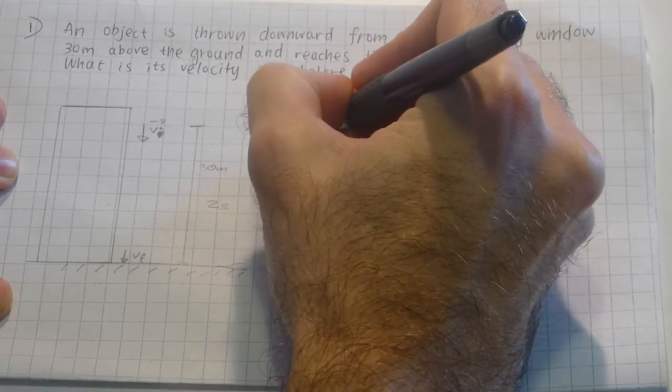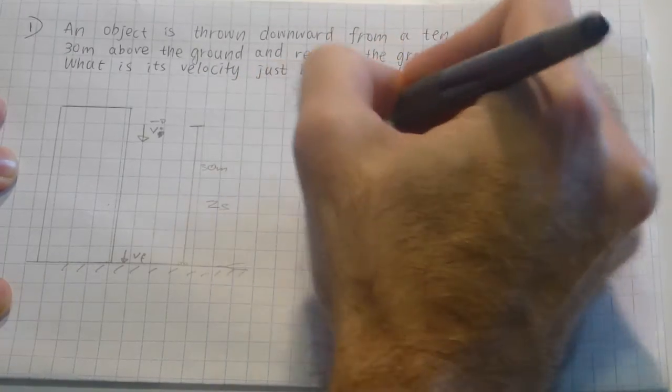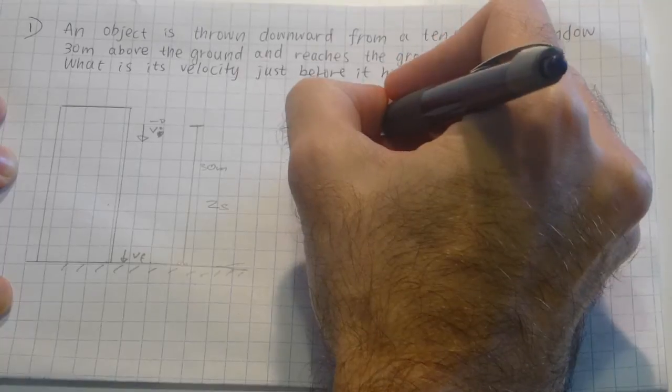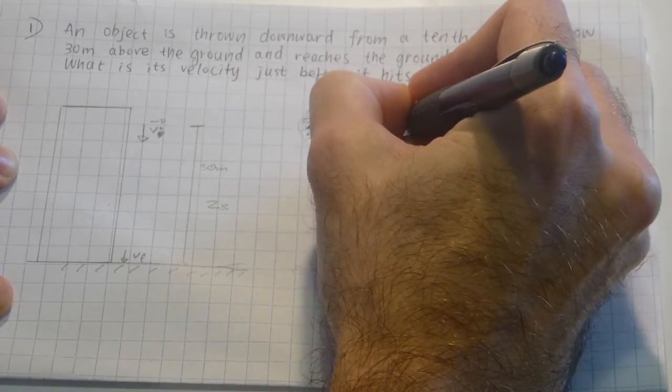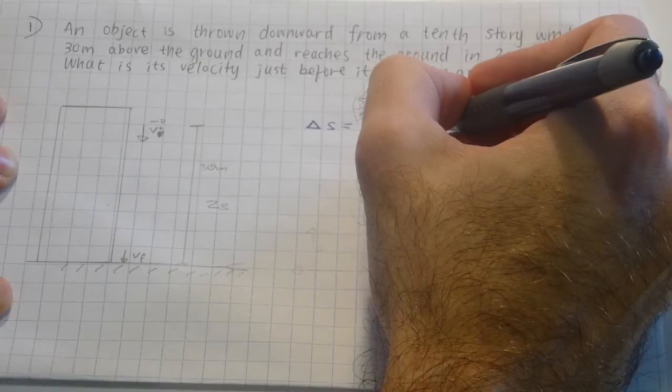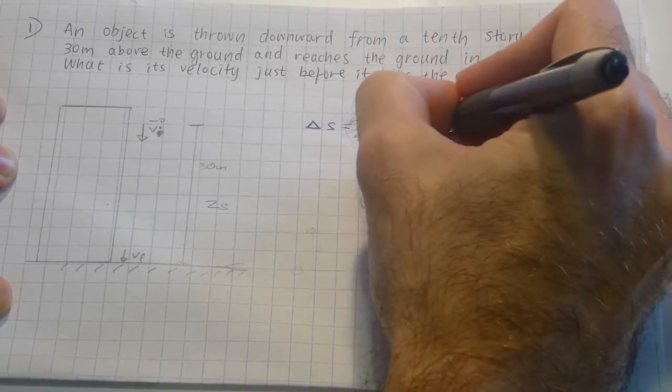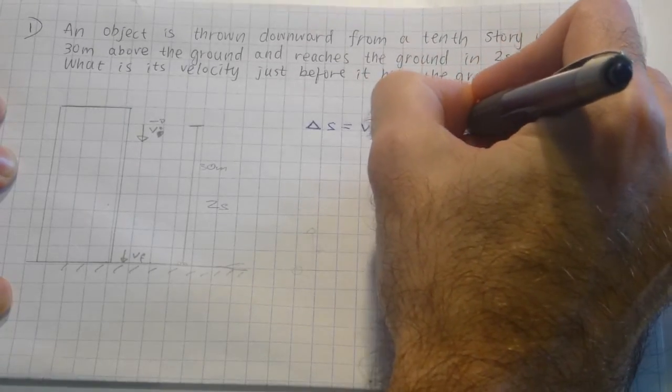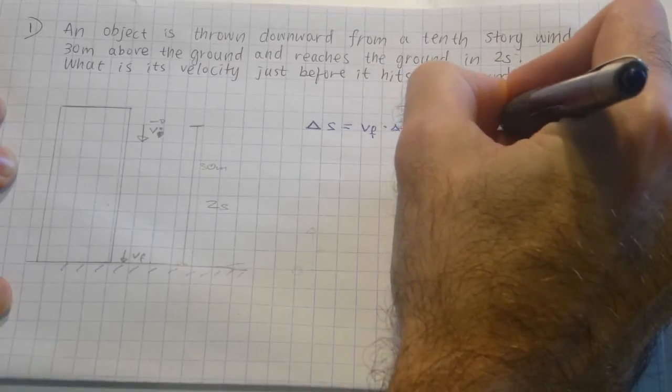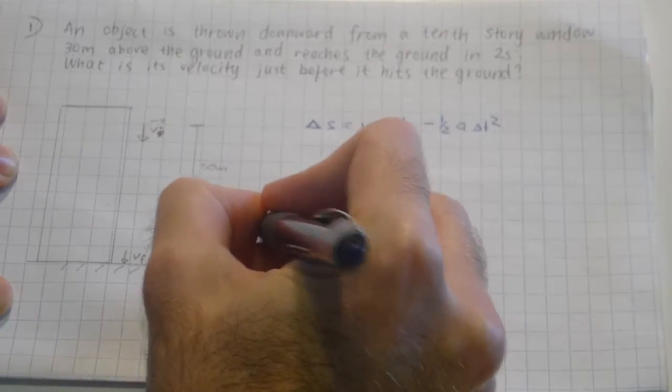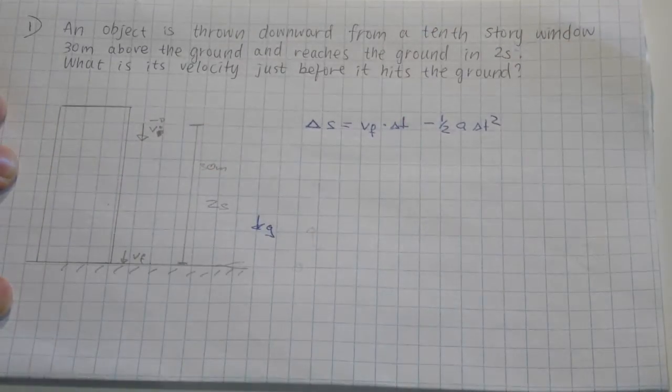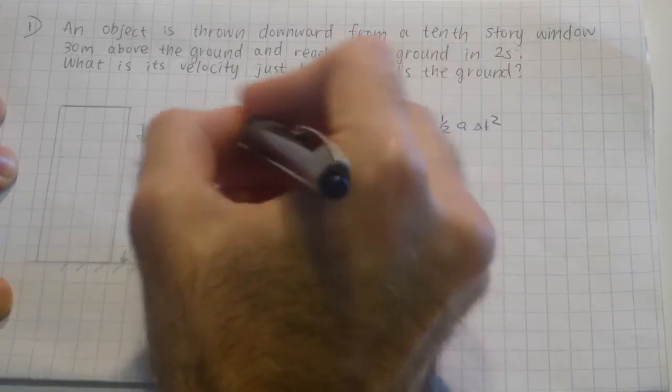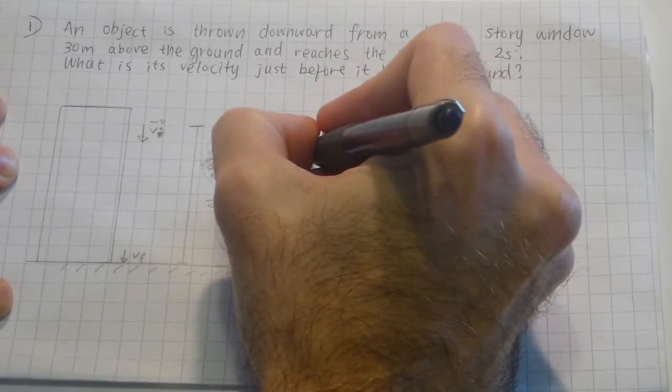Change in position equals v-final times the time minus one-half a times delta-t squared, where a here is gravity going downwards. So if I put that in, I went down by 30 meters.